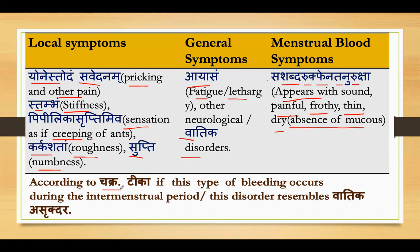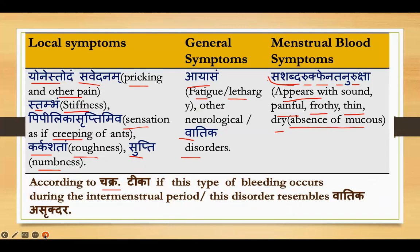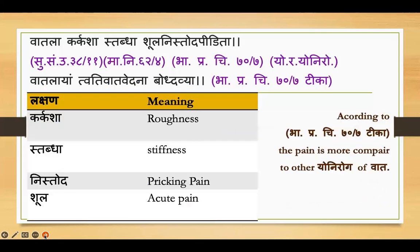According to Chakrapani Tika, it is written specifically about this: 'Sashabda rukphena tanu ruksha artava iti, anrutapyevam bhutartava bhavati, tena vatika pradar rupeyam yoni vyapat.' This means that if intermenstrual bleeding also appears in this manner — sashabda, rukphena, tanu, ruksha — we can correlate it with this condition, and symptoms of Vatik Pradara can also be correlated with Vatik Yoni Vyapat.